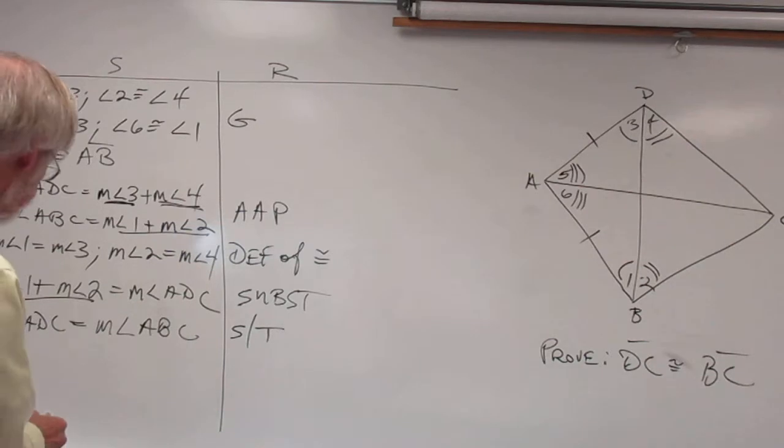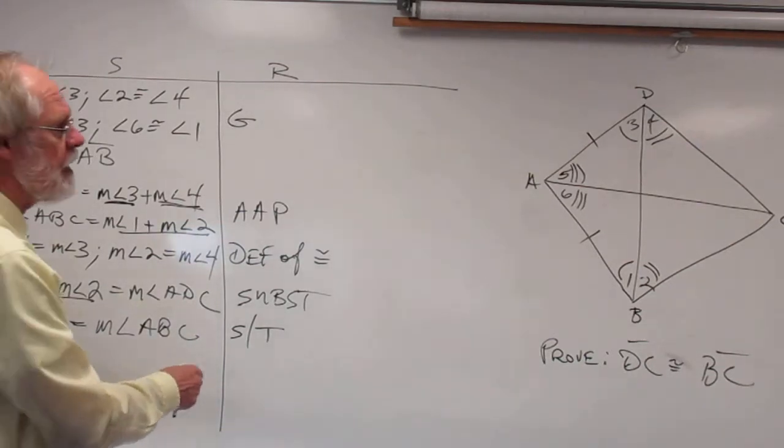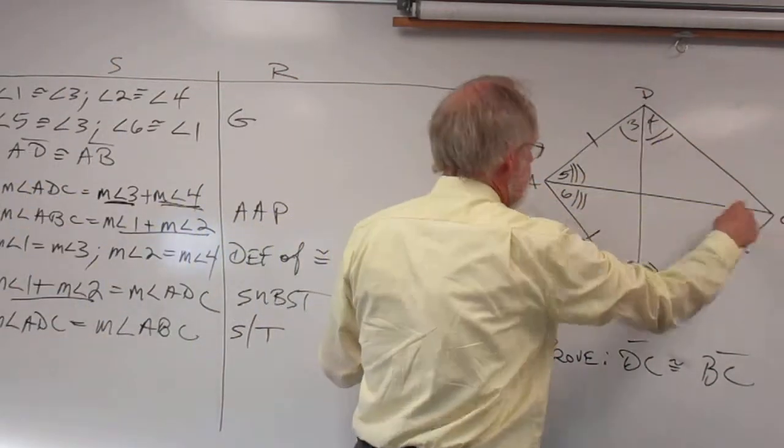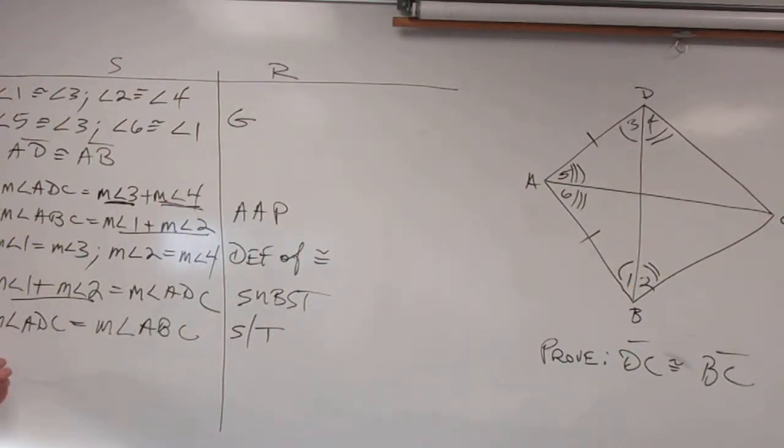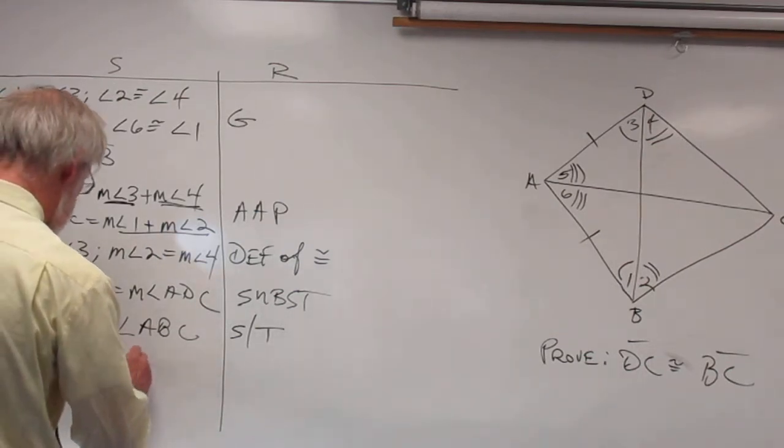Number 6, if I have ADC equal ABC, that's this big angle here equal this big angle here, let's turn them back into congruence. So angle ADC is congruent to angle ABC.